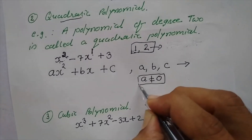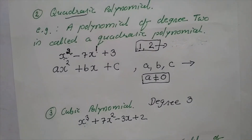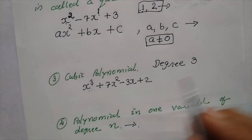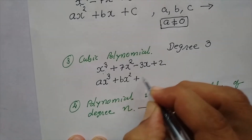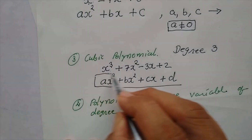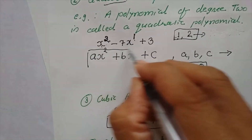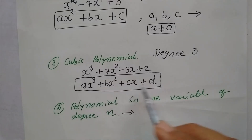Similarly children, for polynomial in one variable of degree n, for this expression you can refer to the textbook, page number 31. The general form of quadratic polynomial is ax square plus bx plus c, where a, b, c are constant numbers and a should not be 0. Think over this: why should a not be 0? If a is 0, what will happen? For cubic polynomial also, the general form is ax cube plus bx square plus cx plus d, where a, b, c, and d are constant numbers. Children, we will meet in the next video session and study this topic in detail. Thank you, children.